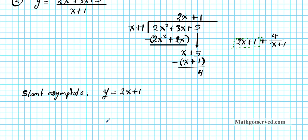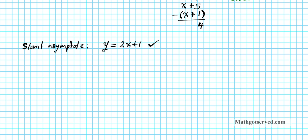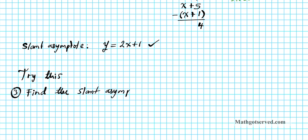Remember that in order to find a slanted asymptote, the degree of the numerator has to be 1 greater than the denominator. I'd like you to try out this problem for number 3: find the slanted asymptote of the rational function y equals x to the third plus x squared over x squared minus 1. Post your answer in the comment section of this video and I'll let you know if you got it right or wrong.